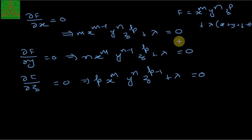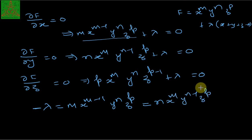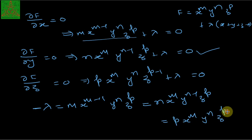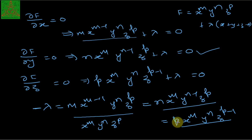Observing these three equations, we can write minus lambda equal to m times x raised to (m minus 1) times y raised to n times z raised to p, which also equals n times x raised to m times y raised to (n minus 1) times z raised to p, and equals p times x raised to m times y raised to n times z raised to (p minus 1). Dividing each expression by x raised to m times y raised to n times z raised to p, we get m over x, n over y, and p over z respectively.